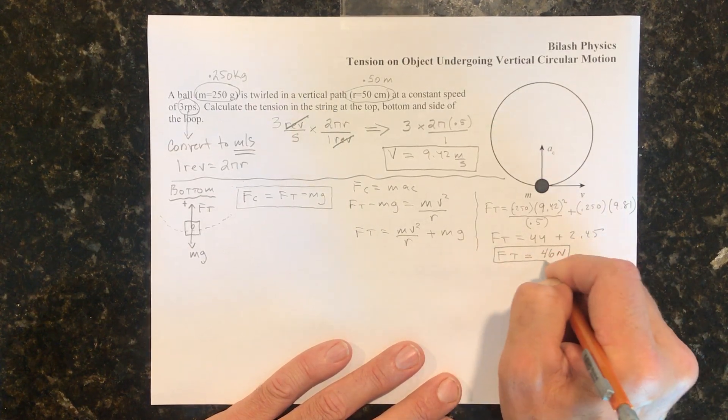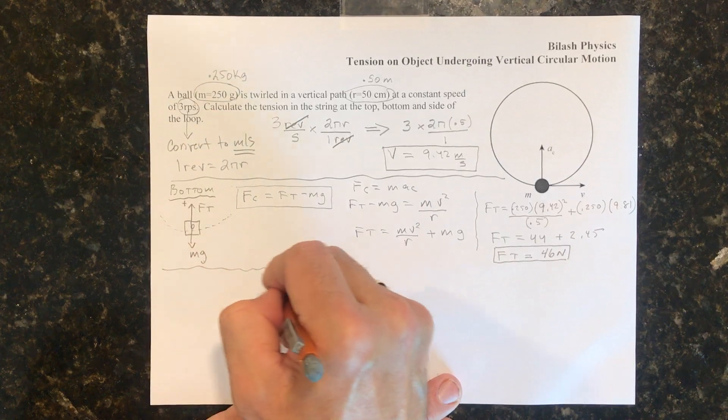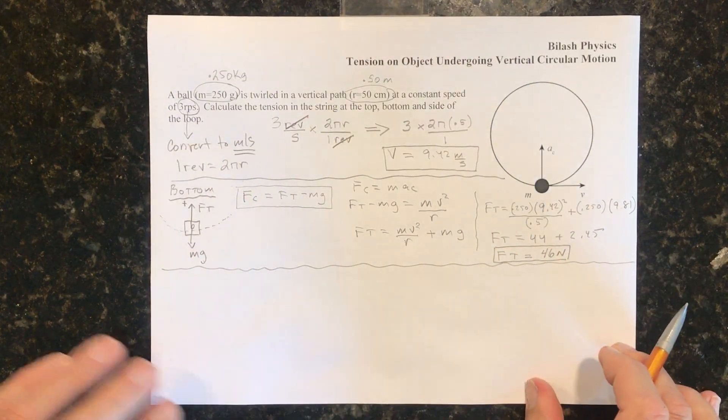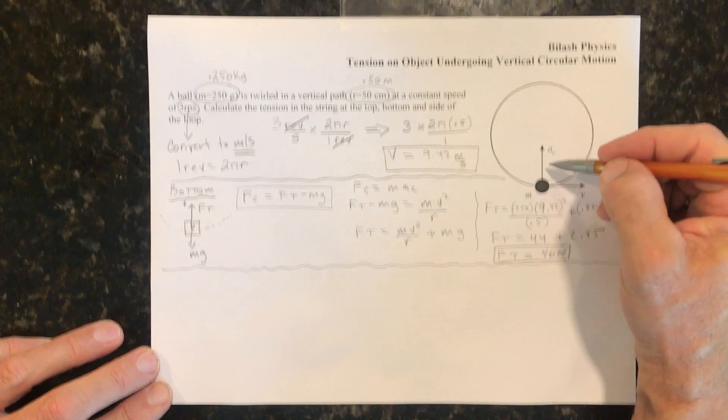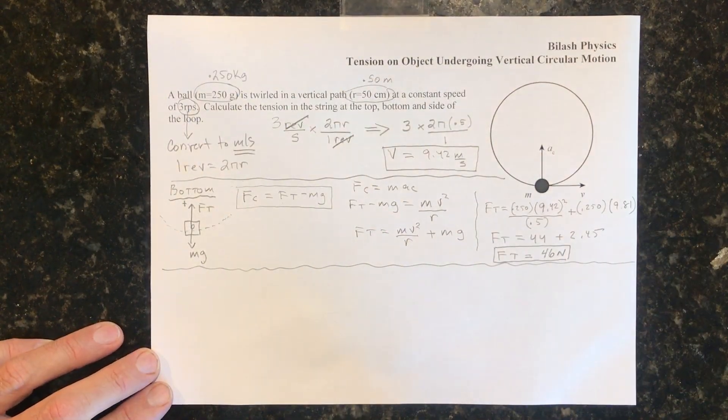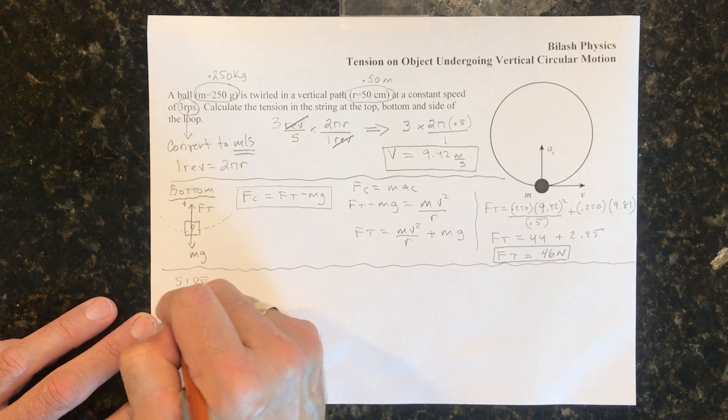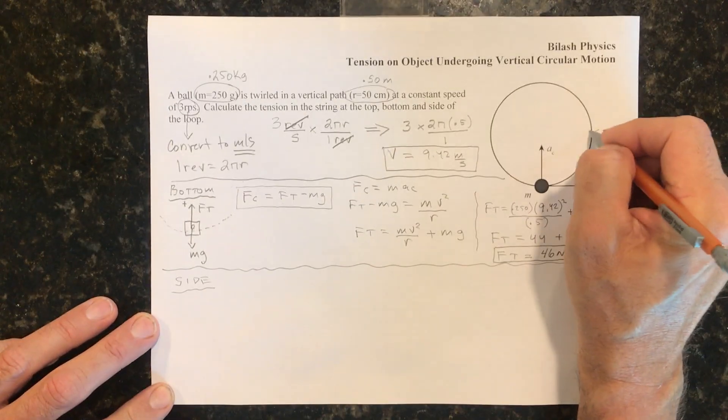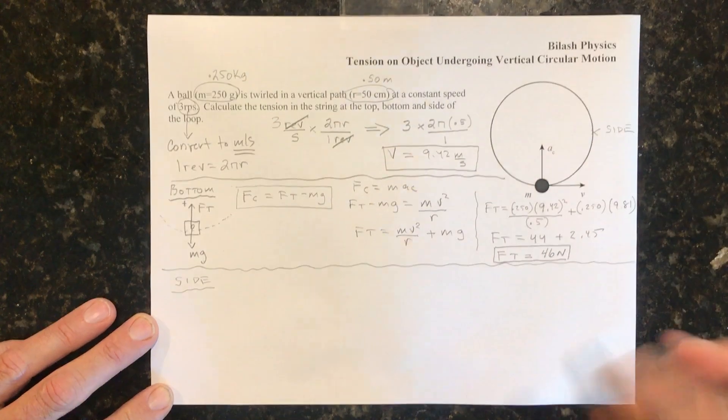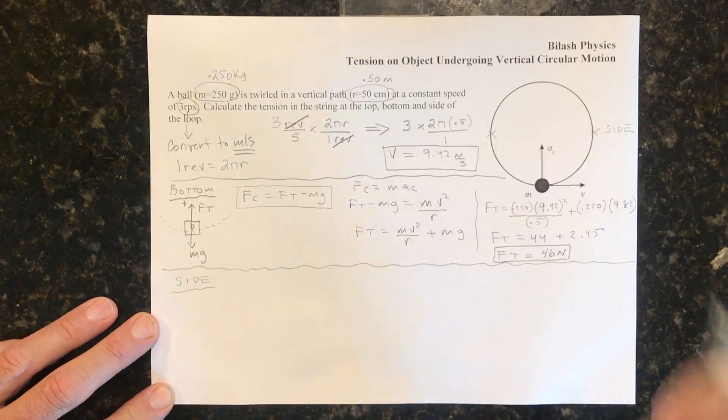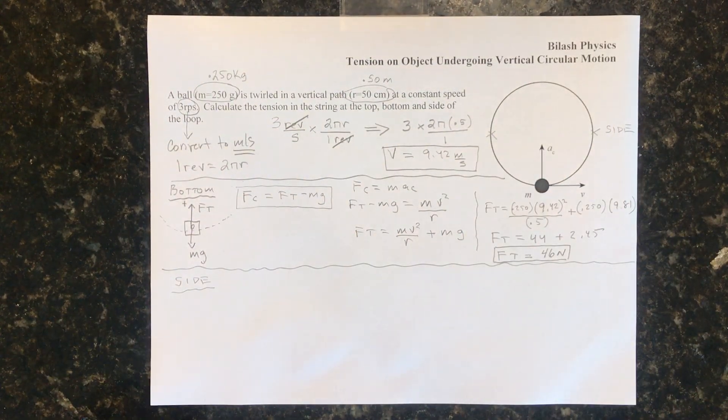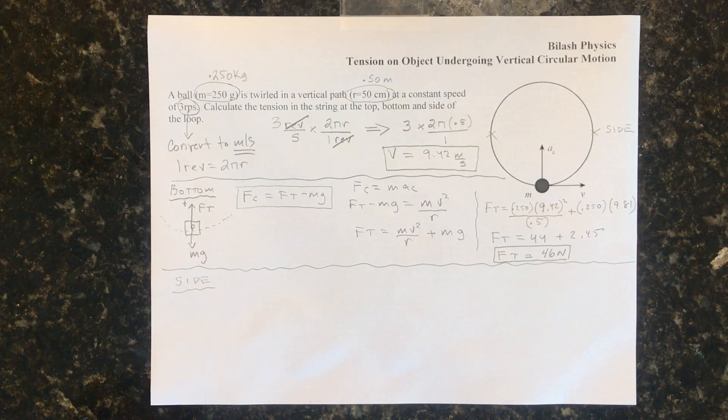Okay. So that's what happens at the bottom of the circle. That's the tension in the string right there in that position. Now if we're on the side, and the side could be right here. So that's a side. Or this side right here. So like the three o'clock or nine o'clock position of the circle.